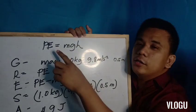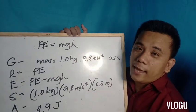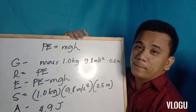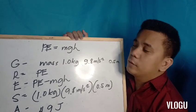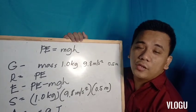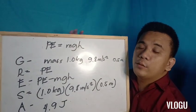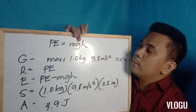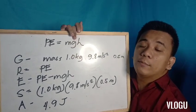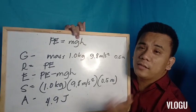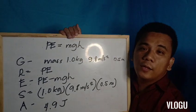Potential energy is equal to mgh. M stands for mass in kilograms or grams. G is the acceleration due to gravity, which is a constant value of 9.8 meters per second squared. H is the height. I will now read the problem.